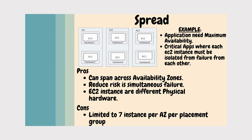The next strategy is called Spread. In this strategy, each EC2 instance is deployed onto a different hardware. Hardware one hosts one EC2 instance, hardware two hosts another, and so on across hardware three, four, five, and six. The main advantage is it can span across availability zones and reduces the risk of simultaneous failure, since EC2 instances are deployed on different physical hardware.